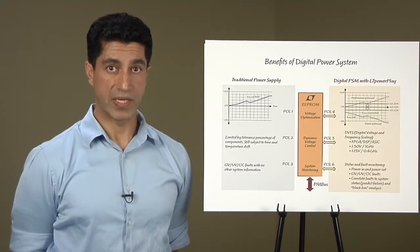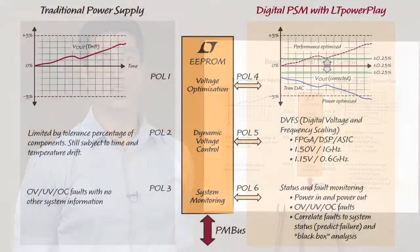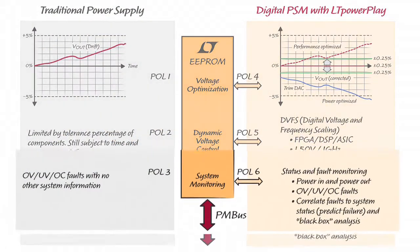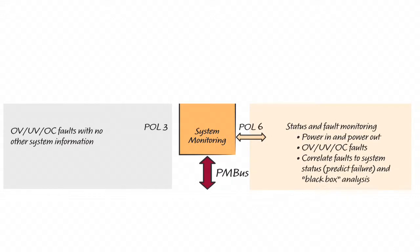The third benefit is system monitoring. In traditional power supply, system monitoring functions are usually separate from the DC-DC regulator. Over-voltage, under-voltage, and over-current faults can be detected, but not all are reported to a host controller.